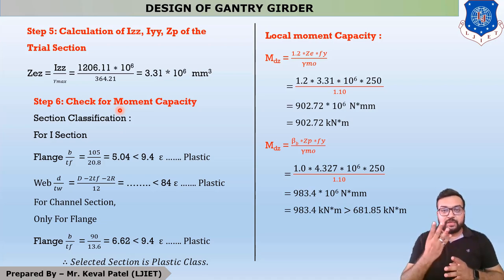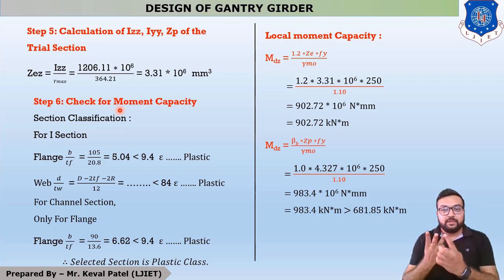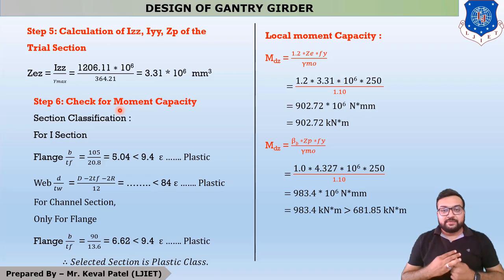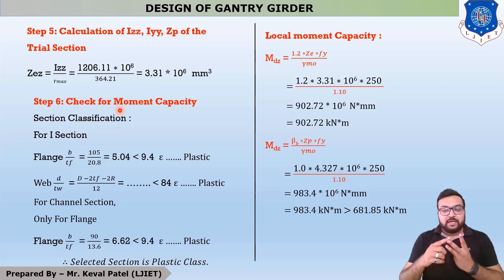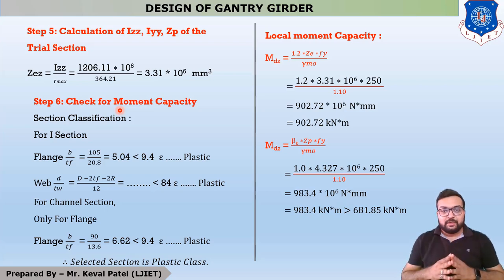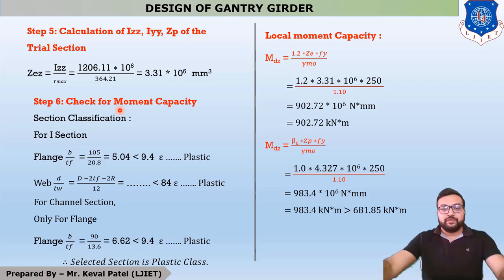There are four main classes: Class 1 is plastic, Class 2 is compact, Class 3 is semi-compact, and Class 4 is slender. However, in IS 800-2007 on page 18, three classes are listed. Our selected section has two members: the first is the I-section. So first we have to check which class the I-section belongs to.